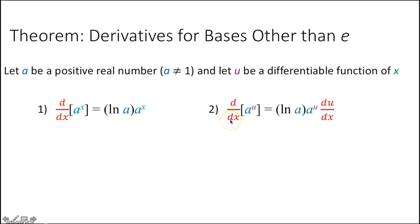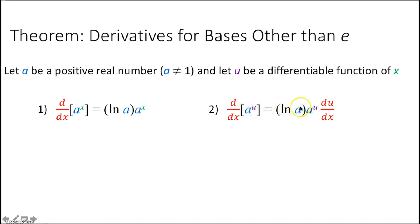Part 2 is the exact same thing, except now if the exponent is a function rather than just x, you have to use the chain rule. When you take the derivative, it's ln(a) times a^u, just like normal, times the derivative of your exponent. For example, the derivative of 2^(5x) is going to be ln(2) times 2^(5x) times the derivative of 5x by the chain rule.